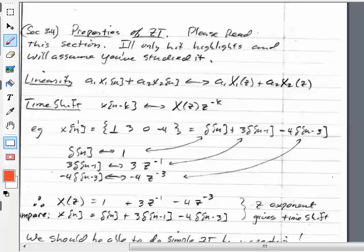For example, suppose I want to find the Z-transform of a simple signal. And it's 1, 3, 0, minus 4. 1 is at the n equals 0 point. I can write this out in a functional form as delta function. That's delta of n.